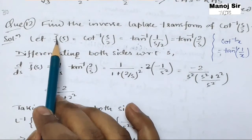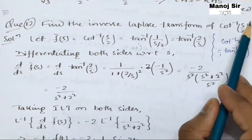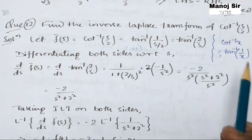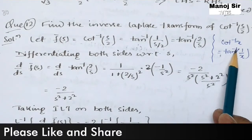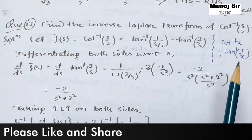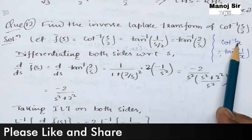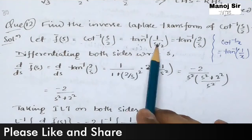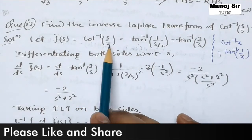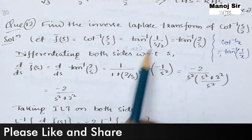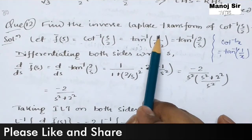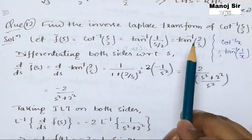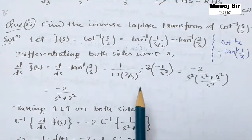Let f̄(s) = cot⁻¹(s/2). You must know the formula: cot⁻¹(x) = tan⁻¹(1/x). Applying this formula, cot⁻¹(s/2) can be written as tan⁻¹(1/(s/2)), and since 1/(s/2) = 2/s, we get f̄(s) = tan⁻¹(2/s).